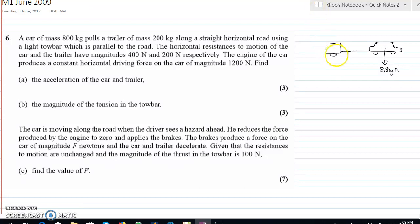So that's why in this case you notice that the mass is only 200 kg or the weight is 200g in Newton. And on top of that you have horizontal resistance. Obviously for the car the resistance is a lot bigger, 400 N, and for the trailer it is 200 N. Now the engine is producing a driving force which is 1200 N. So it's going in this direction.